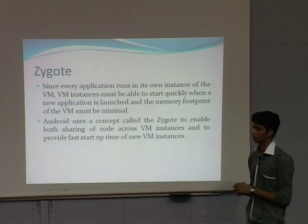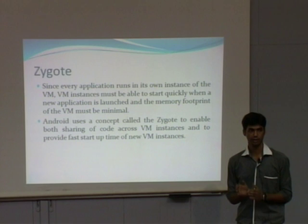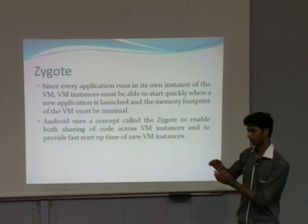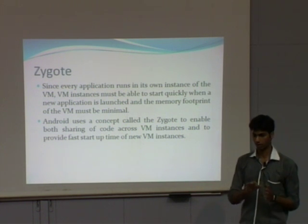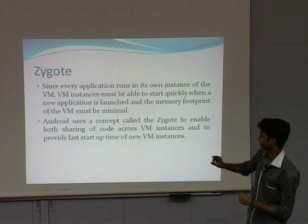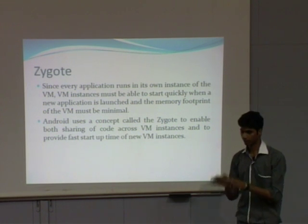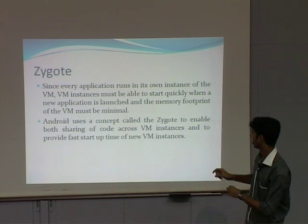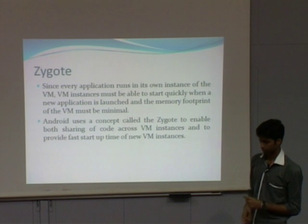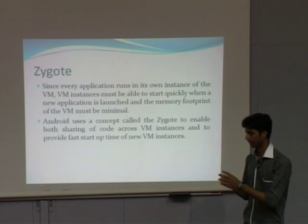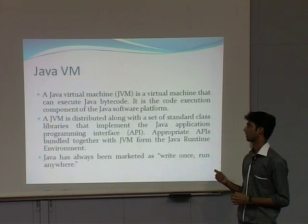Now, zygote. The problem in Android OS is that each application has its own instance of the VM, meaning each application uses a different VM instance. So we have to manage these different VM instances. For that purpose, Android uses a concept called zygote, so that code can be shared between different VM instances and for fast startup of different VM instances. Basically, zygote is used to switch between different VMs and to make startup fast.